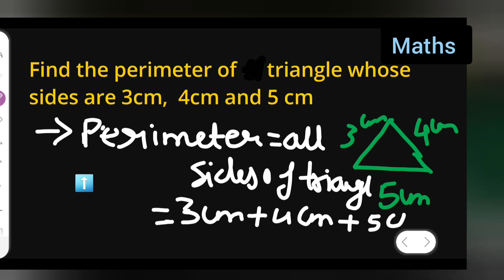Okay, now add this. 5 plus 4 will give you 9, 10, 11, 12. So answer is equal to, this is equal to 12 centimeter, right? So the perimeter of the given triangle with 3 centimeter, 4 centimeter, the sides are given, right? 3, 4 and 5.